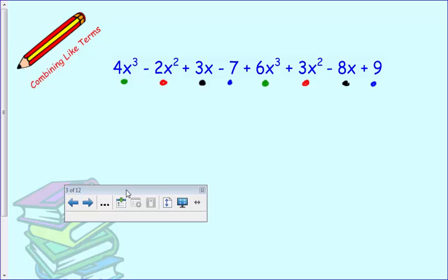Keep in mind that the sign directly to the left, or in front of each term, is the sign that we're going to associate with it. So, when I go to combine 4x cubed and 6x cubed, I'm going to add, giving me 10x cubed. So the exponent stays the same. Hopefully you remember doing this in algebra 1.